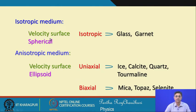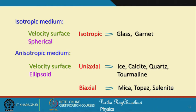For an isotropic medium the velocity surface is spherical — the wavefront in all 4π solid angle directions is at the same velocity. Examples include ordinary glass and garnet. For an anisotropic medium the velocity surface is in general an ellipsoid. Examples of uniaxial media include ice, calcite, quartz, and tourmaline; biaxial media examples are mica, topaz, and selenite.